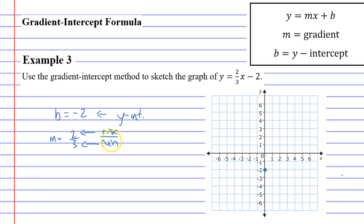So what we're going to do, rather than going 1 across and however many up, this time we're going to go 3 across and 2 up. Because that's our run and rise.